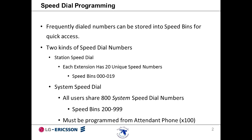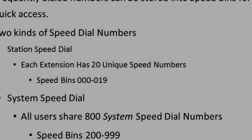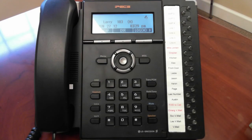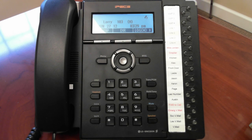System speed dial numbers must be programmed from the attendant phone, which is often extension 100. Let's program a speed dial bin from our telephone set. We'll use speed bin 00, which is the first station speed dial bin.